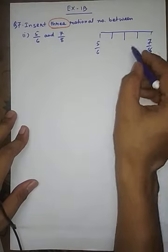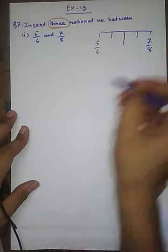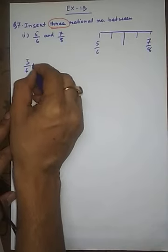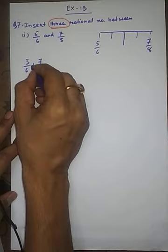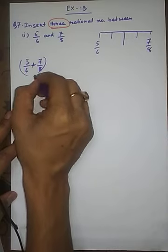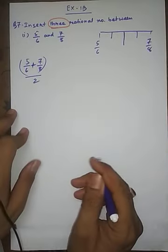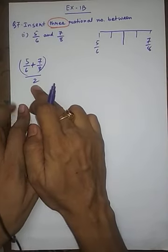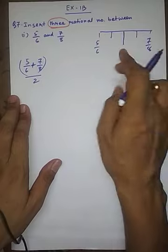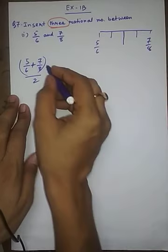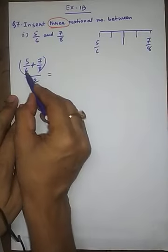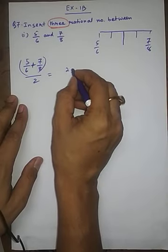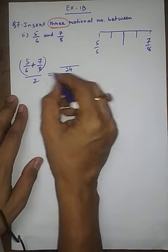First we will find the middle one. To find the middle rational number, you just have to add the two rational numbers and divide by 2. Adding the rational number and dividing by 2 gives you the number at the middle of these two numbers. So, the LCM of 6 and 8 will be 24.